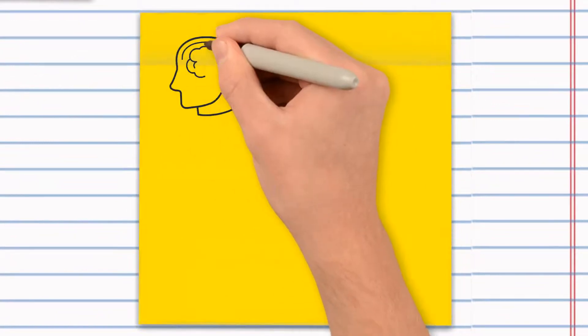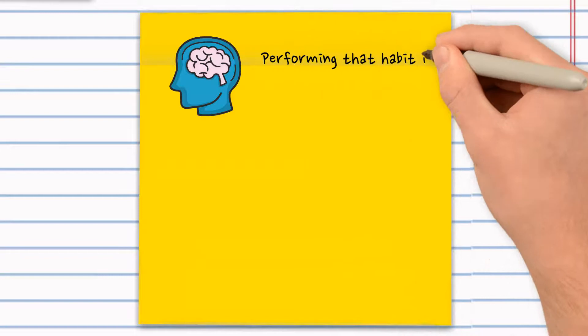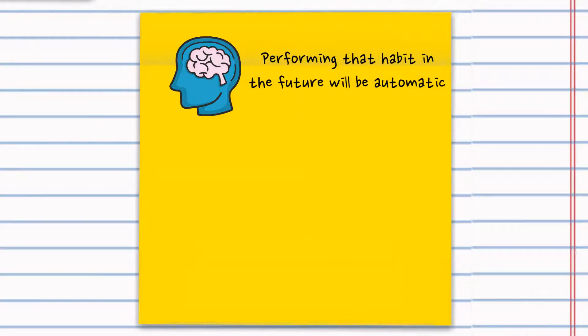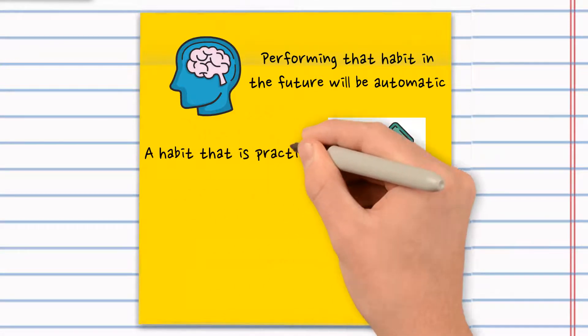It is better to meditate every day of the week for four minutes than to meditate only one day for half an hour. Every time that you perform your mini habit, you're building a neuronal pathway in your brain so that in the future performing your habit will be automatic.